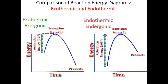On the other side, the activation energy is much higher and the products are higher in energy than the reactants. This type of reaction is called endothermic — meaning you have to put energy into the reaction to get it to go. One key difference between an exothermic and endothermic reaction is that an exothermic reaction has a lower activation energy than an endothermic reaction.